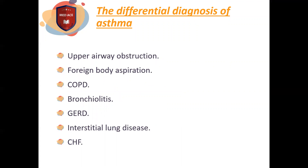The differential diagnosis for asthma includes upper airway obstruction, which presents with cough and shortness of breath but with stridor — not wheeze. Stridor is a harsh inspiratory sound. Foreign body aspiration can also cause wheeze, but the key difference is that the patient will have a choking episode before the wheeze.